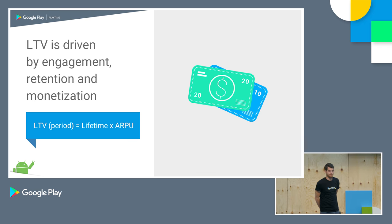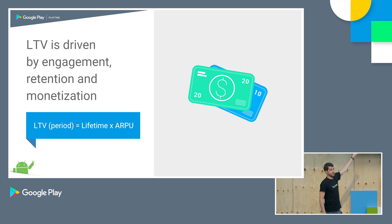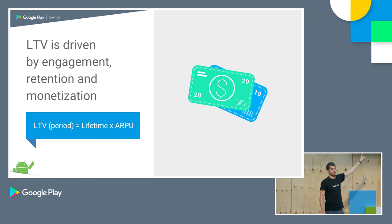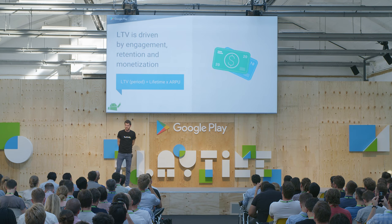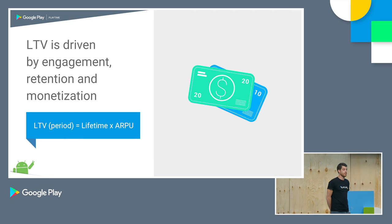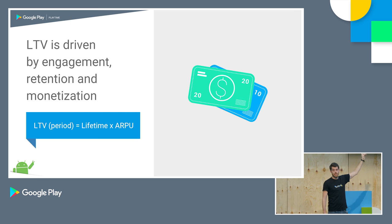Now, math. The formula you see here is the basis of every other lifetime value formula you'll find. Lifetime value depends on engagement, retention, and monetization — I think Maxime had that on his slides as well, but it's true. It depends on those three variables. Lifetime value for a certain period equals lifetime times average revenue per user.